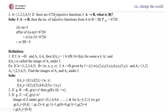If A = {1, 2, 3, 4, 5} and there are 6720 injective functions f from A to B, what is the size of B? The number of injective functions from A to B is P(n, m) = n! / (n − m)! = 6720. Since |A| = m = 5, substituting n = 8 satisfies this equation, therefore |B| = 8.